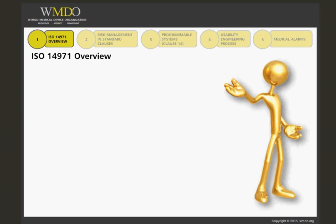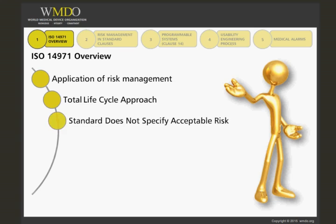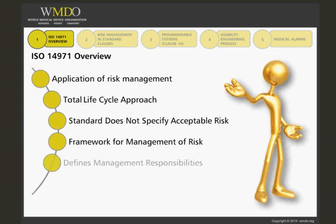To use Edition 3.1, it is essential that you are familiar with the ISO 14971 standard, as covered in depth in the other courses of the WMDO library. As a brief reminder, ISO 14971 provides a specific outline of the application of risk management to medical devices. It addresses a total product lifecycle approach. ISO 14971 does not specify what represents an acceptable risk — acceptability is determined by the manufacturer for each device. It provides a framework for the management of risk and defines management responsibilities related thereto.